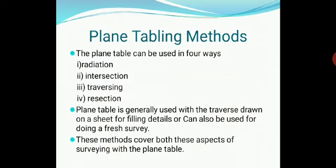There are four methods of plane table surveying: radiation method, intersection method, traversing method, and resection method. The plane table is generally used with a traverse drawn on a sheet for filling in details. It can be used for a fresh or new survey, and these methods cover both aspects of surveying with the plane table.